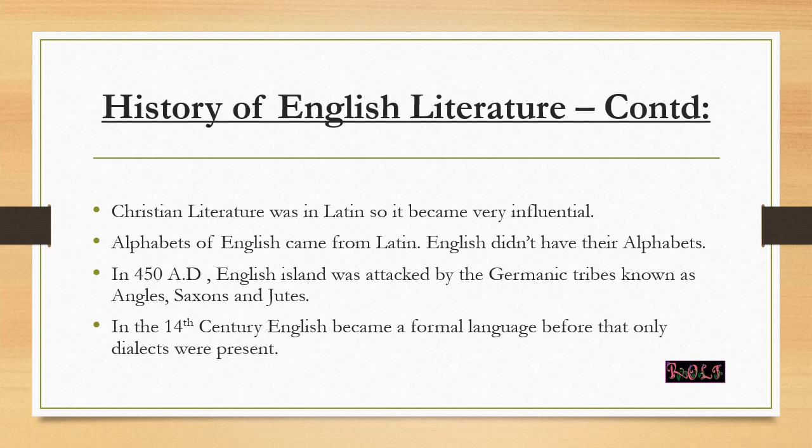By 450 AD, England was attacked by many Germanic tribes like the Angles, Saxons, and Jutes, and their dialects were spoken in the regions ruled by these tribes. Unlike the Romans who did not settle, the Angles, Jutes, and Saxons became the natives of England and these tribes ruled till the 10th to 11th century.